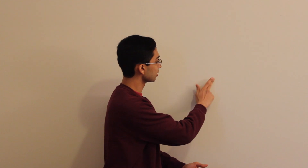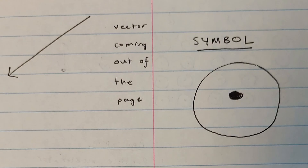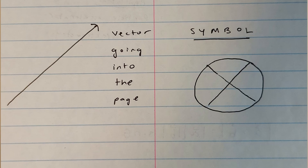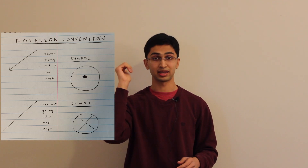Since we're working in three-dimensional space, we need a good way to represent vectors that aren't in the plane of the page — vectors coming out of the wall or going into the wall, or in your case, coming out of the page or going into the page. The convention used in physics is that a dot on a page is a vector coming out towards you, whereas a cross is a vector going directly back into the page.